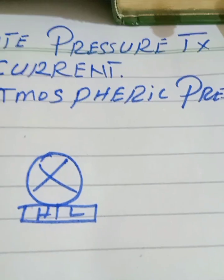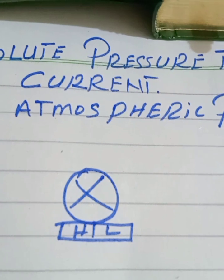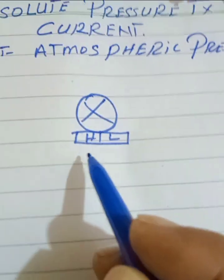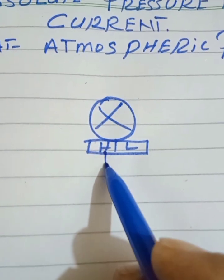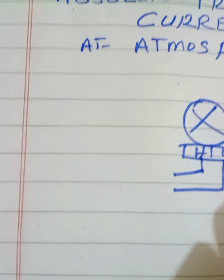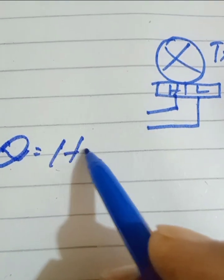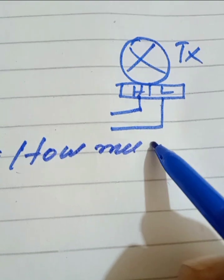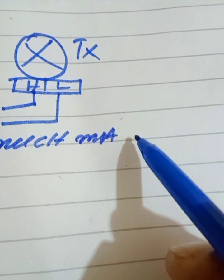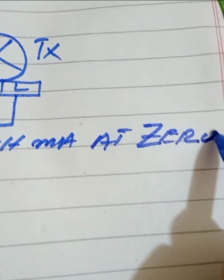For example, if you have one absolute pressure transmitter you want to check in the atmosphere, how much output will there be? The question is: how much milliamps at zero pressure? Here we draw our HP tapping, our LP tapping, and our transmitter. The question is: how much current in milliamps at zero pressure?